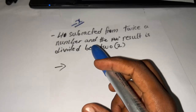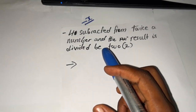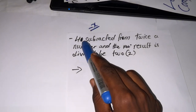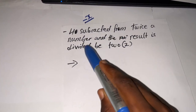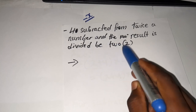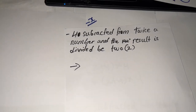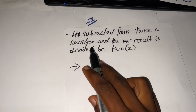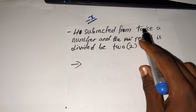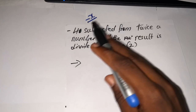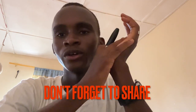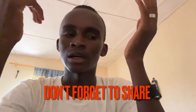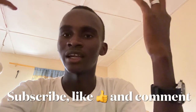Let's look at this other statement, which is similar to what we just analyzed: '4 subtracted from twice a number, and the result is divided by 2.' I'm going to stop here and let you try analyzing this statement on your own to see what you can do. Thank you for watching the video. Please don't forget to share the video, subscribe, like, and comment.